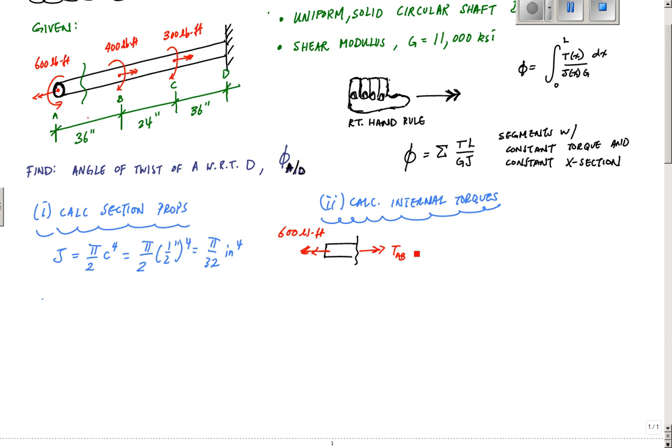So if I sum the torques equal to zero, TAB minus 600 pound-feet equals zero. That tells me TAB equals 600 pound-feet, or converting to kip-inch, 0.6 times 12 equals 7.2 kip-inch for segment AB.